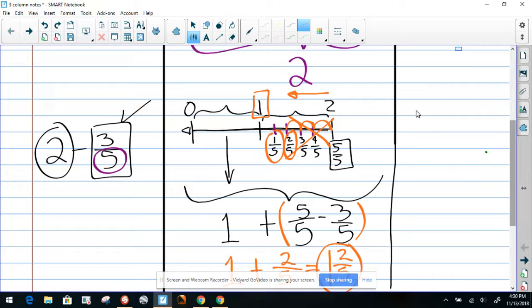So again, the answer is going to be, from 2 minus 3/5 equals 1 and I said 2/5.